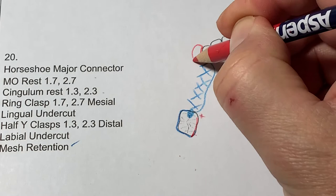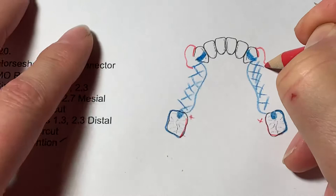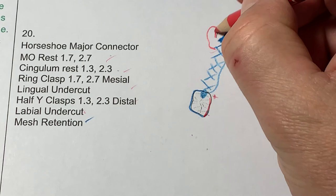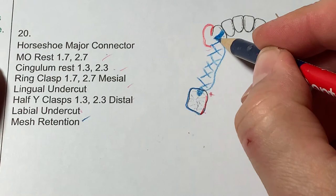Half Y clasp. I didn't say which way, but generally speaking, towards the distal for aesthetic reasons. And into the carriage, one prosthetic tooth spacing. Oh, I said distal labial undercut, didn't I? And the last but not least, horseshoe major connector.